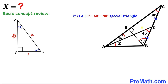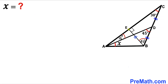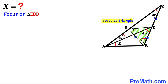So in triangle BEC, if the hypotenuse is 2 units, the smallest leg is 1 unit and the other leg is square root of 3 units. Now I am going to connect points D and E. Let's focus on triangle EBD. We can see that triangle EBD is isosceles since BE equals BD, so angle BED is congruent to angle BDE.